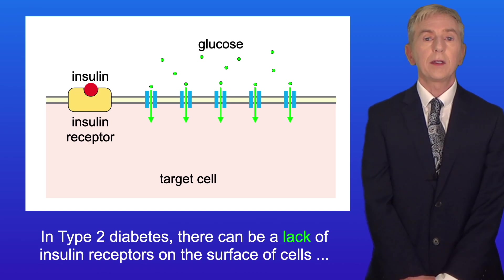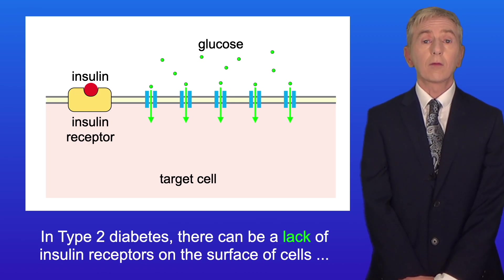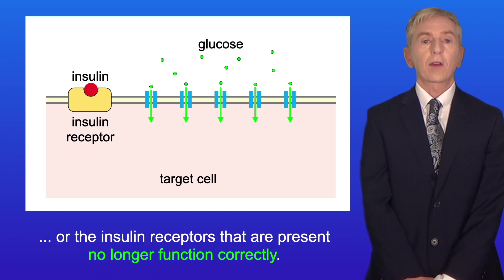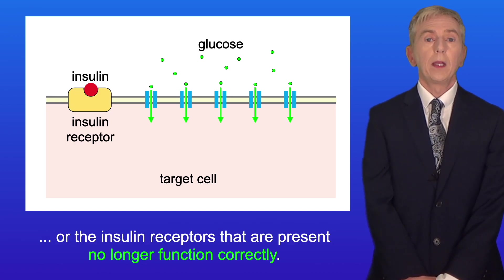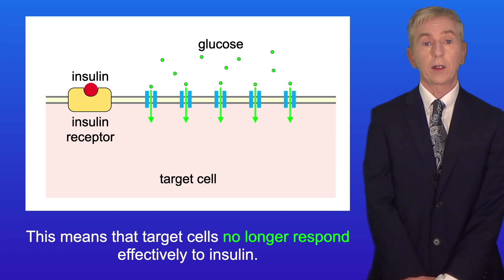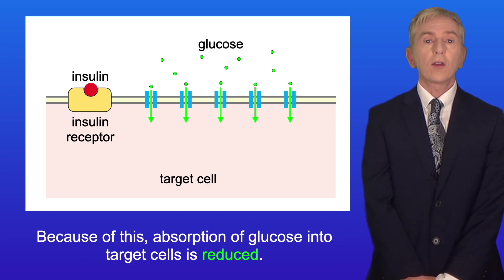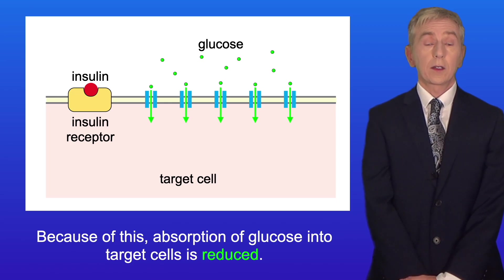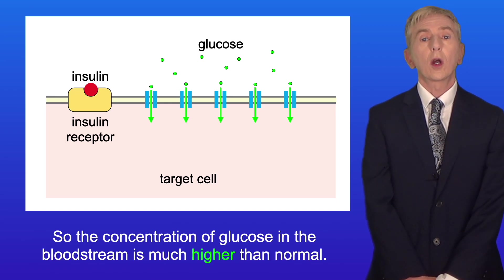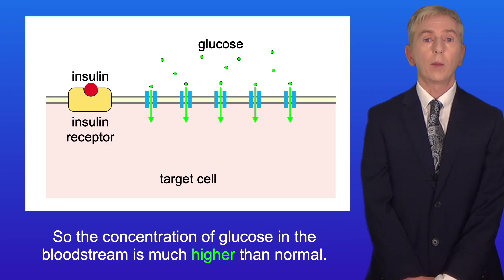In type 2 diabetes, there can be a lack of insulin receptors on the surface of cells, or the insulin receptors that are present no longer function correctly. This means that target cells no longer respond effectively to insulin. Because of this, absorption of glucose into target cells is reduced, so the concentration of glucose in the bloodstream is much higher than normal.